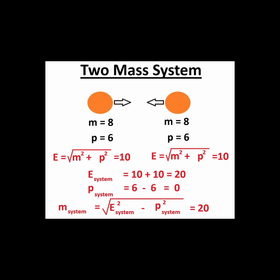Thus the mass of the system of the two objects is 20, but the sum of each mass of the individual objects is 16. There is more mass in the system of objects than in each individual object.